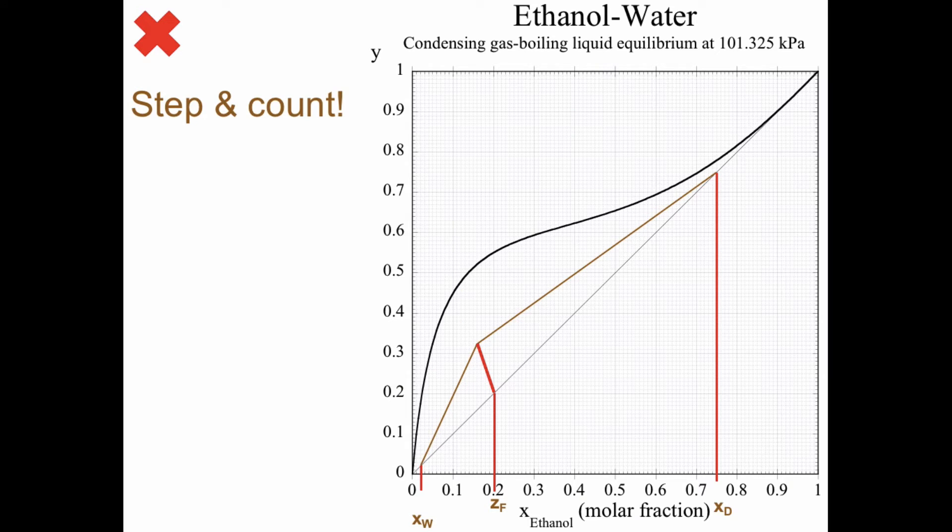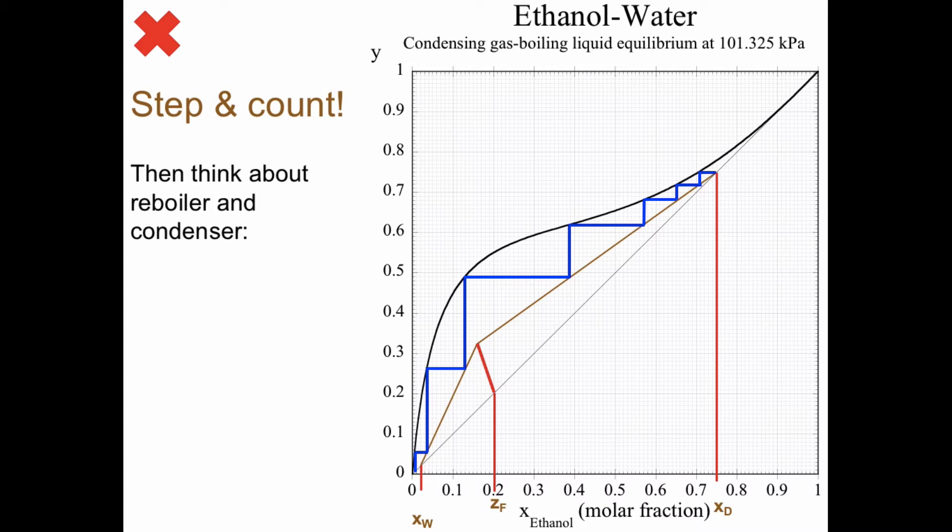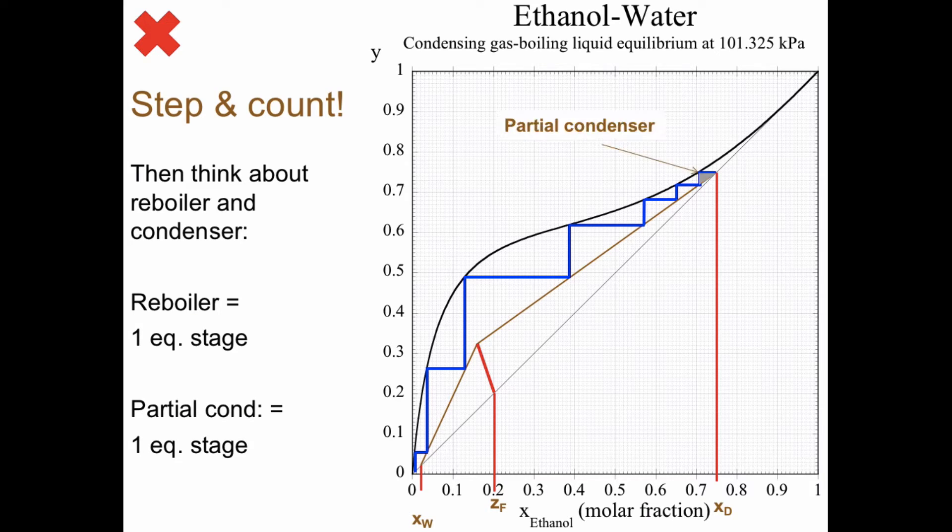And now it's just to step and count, so we switch between the mass balance and the equilibrium, the mass balance equilibrium, the mass balance equilibrium, and so on. And there we have drawn everything, and time to think about the reboiler and condenser. Reboiler is one equilibrium stage outside the column, and the partial condenser is one equilibrium stage outside the column. So the partial condenser is up there.